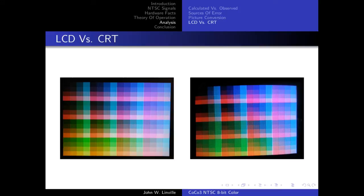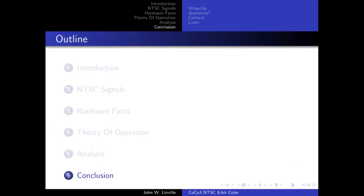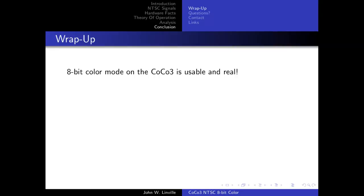Regarding differences between LCD and CRT: the picture on the left is the calculated palette from a few slides back, and the picture on the right is the same image displayed on a Sony 27-inch CRT from around 1996. They're not exactly the same but pretty close. It's not an LCD thing or a CRT thing — it's a signal thing. Keep in mind that NTSC has often been derided with the acronym 'Never The Same Color,' so it may be impossible to get exactly the same results even between two monitors.